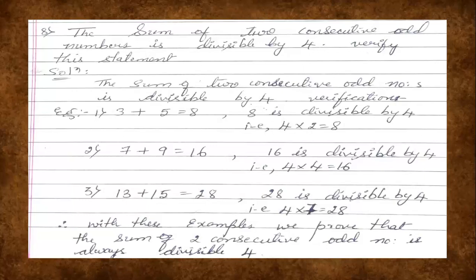The third example: two consecutive odd numbers 13 and 15. When we add 13 + 15 we get 28. Is 28 divisible by 4? Yes — 4 × 7 = 28. So 28 is divisible by 4. Therefore, when we take any two consecutive odd numbers and add them, the sum is divisible by 4. With these examples, we have proved that the sum of two consecutive odd numbers is always divisible by 4.